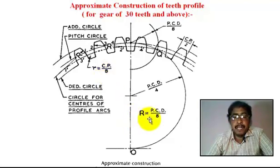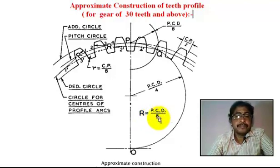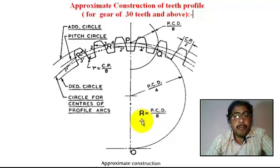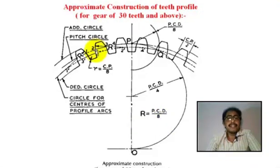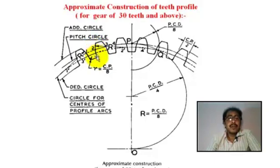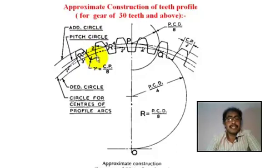Now we take a measurement with pencil compass. The radius is PCD by 8. With the pencil pointer at point 2, pin on the base circle at point 2-dash, we draw an arc from the addendum circle to the addendum circle.